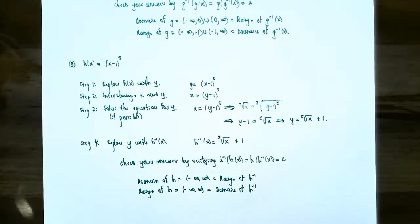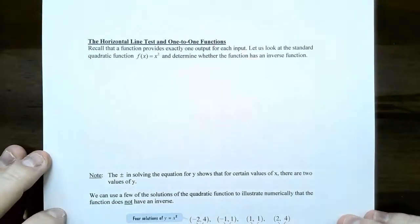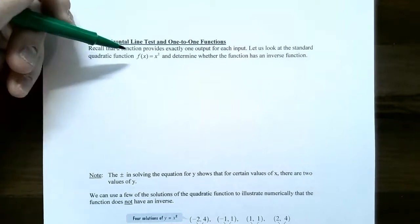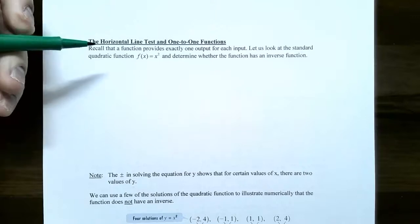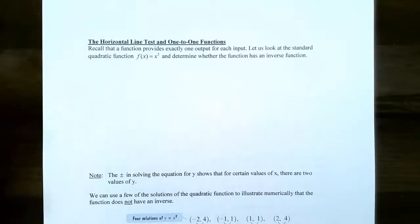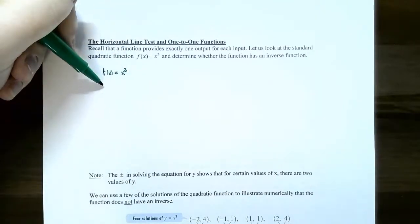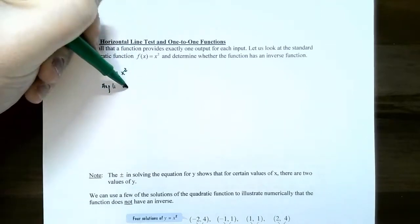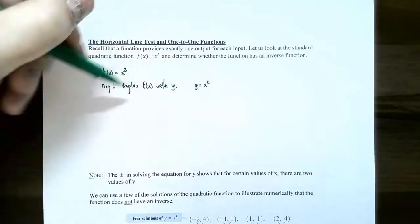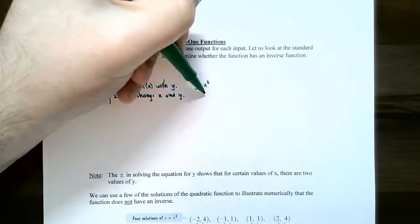This gives a variety of function types for finding inverses: a linear function, a rational function, and a power function. Now let's talk about how graphs relate to having an inverse function — what's called the horizontal line test and one-to-one functions. Recall that a function provides exactly one output for every input value. Let's look at f of x equals x squared, a quadratic function. Let's see if this function has an inverse by going through the four steps.